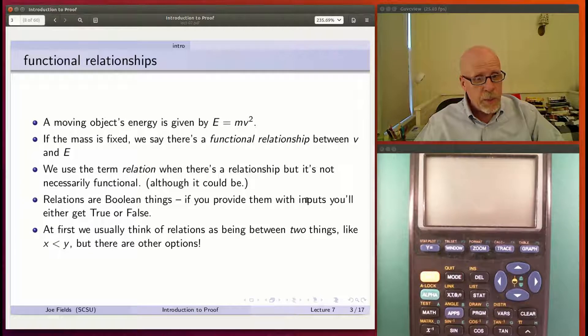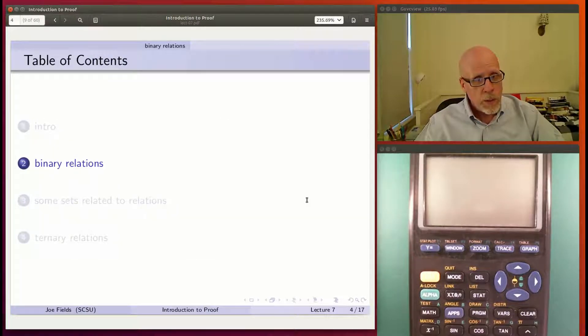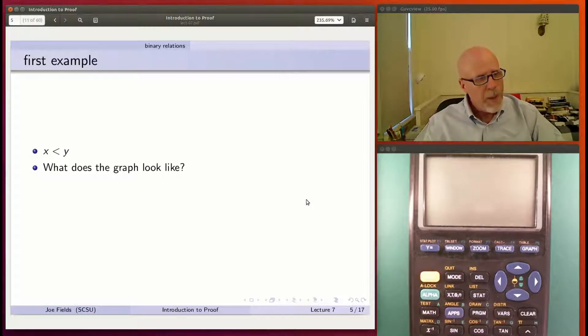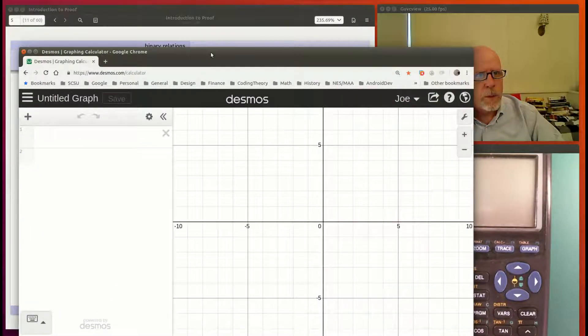At first, we usually think of relations as being between two things. I think my favorite example is x less than y. That's a relation. The less than sign is actually the relation, x and y are the inputs. But there are options. You can have three things, you can have multiple things. But when there are two things, that's known as a binary relation. My favorite example again: x is less than y. What does the graph of x less than y look like? I think that's something we've done in high school, maybe.